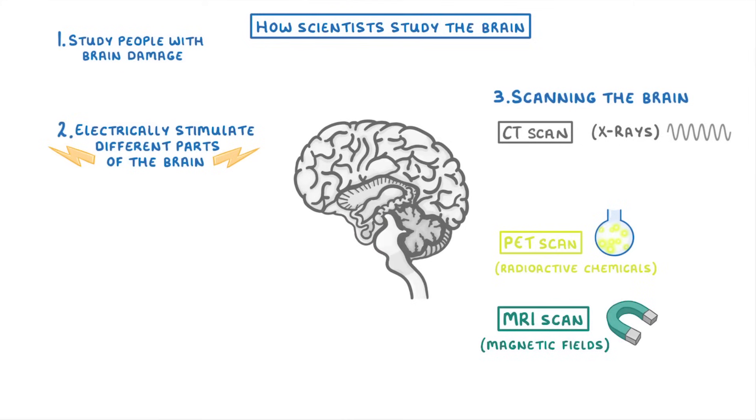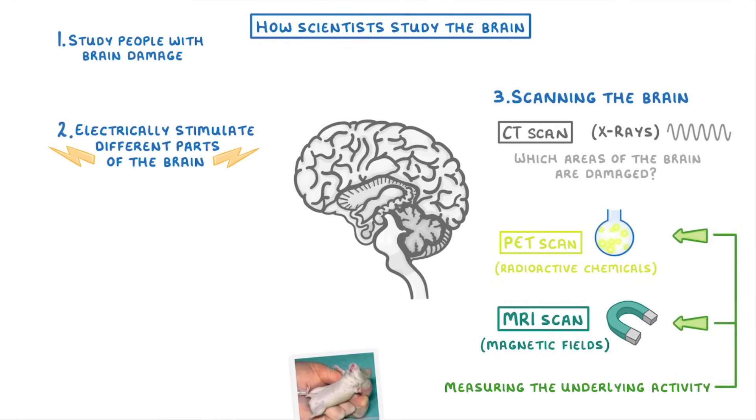CT scans are mainly used for seeing which areas of the brain are damaged, whereas PET and MRI scans are better at measuring the underlying activity of the brain. So if you're shown images that make you sad while in an MRI machine, then certain parts of your brain will appear brighter, because they're associated with feeling sadness or with eyesight. Whereas if you were to listen to music while in an MRI machine, then you'd see a different pattern of activity in the brain.